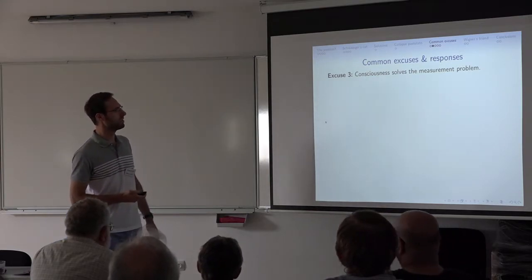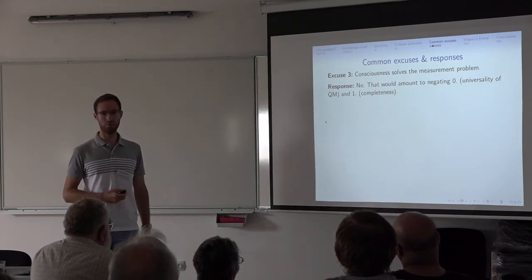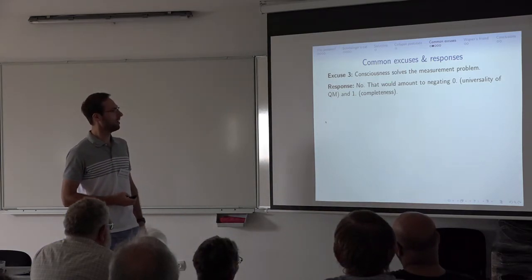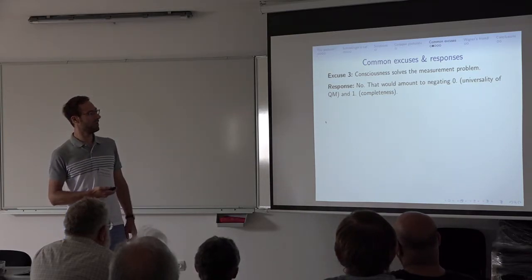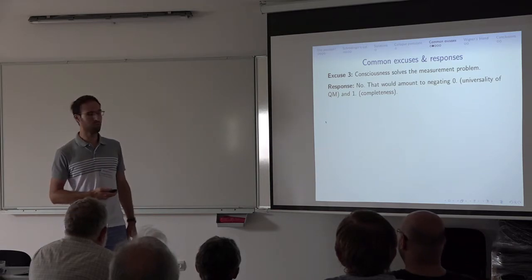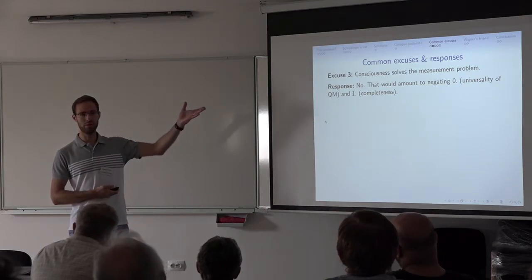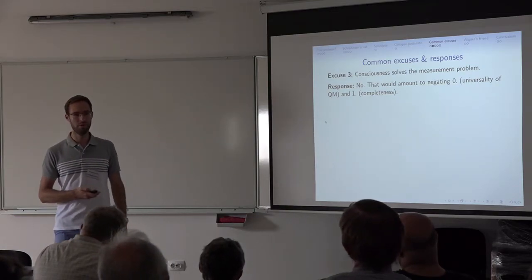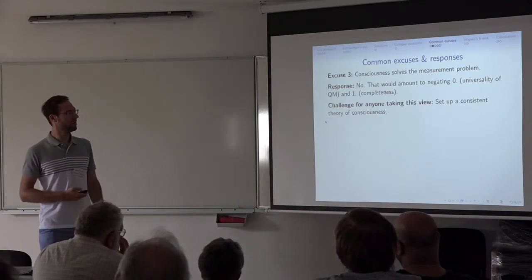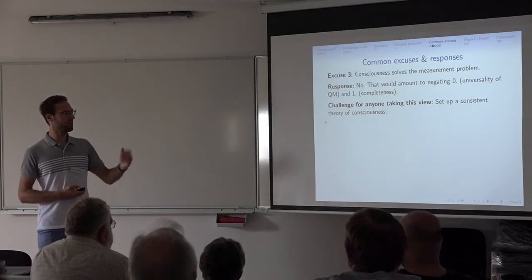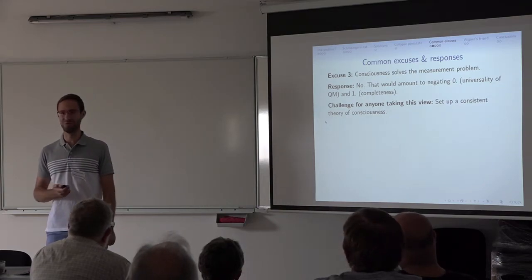Objection three: consciousness solves the measurement problem. Response: as I defined the measurement problem, that's not correct. Maybe that would amount to negating assumption zero — the universal applicability of quantum mechanics — and also the completeness, because consciousness would then not obey quantum mechanics. And if it did, it would still lead to the same kind of problem. So everyone who takes such a view, I have a challenge for you: set up a consistent theory of consciousness first, and then we can talk. As far as I know, no one has really done that — though there is a group in California, QBR, who are actually working on this.